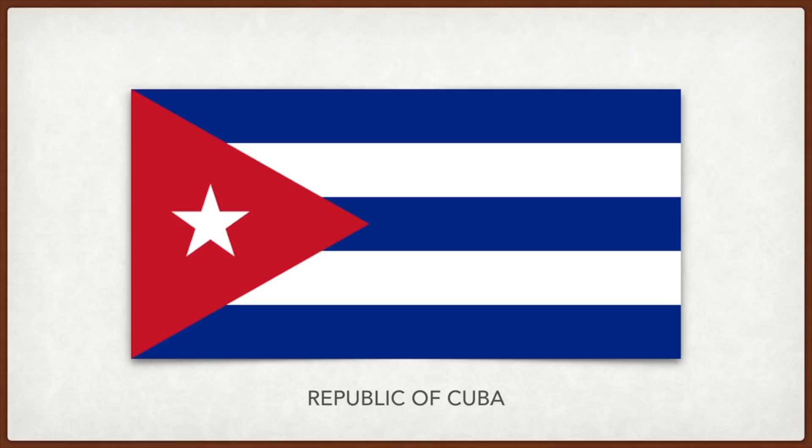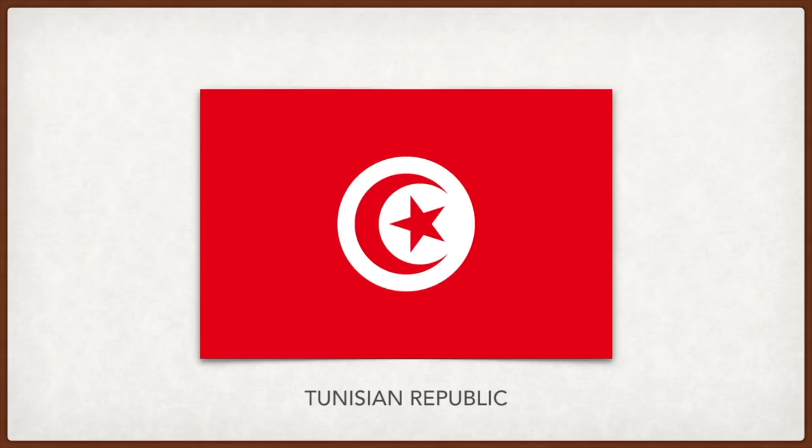Tunisia: inspired by the flag of the Ottoman Empire, of which Tunisia was a part. Red represents the blood of those killed during the Turkish conquest of Tunisia and white represents peace. The crescent moon and the five-pointed star represent unity of all Muslims and the five pillars of Islam respectively.